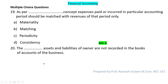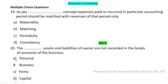The next question says: the dash assets and liabilities of the owner are not recorded in the books of account. The personal assets and liabilities of the owner are not recorded in the books of account. So here option A is the right answer. As per the business entity concept, the owner and the business are considered two separate entities, so personal assets and liabilities are not recorded in the business books.